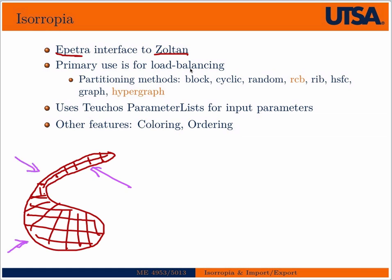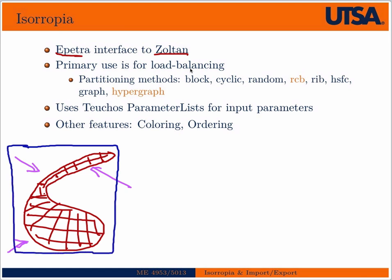We want to see how it deforms. I've drawn it very irregular for a particular reason. If we did something very naive, like partitioned it in space such that this part went to processor 0, this part to processor 1, this part 2, this part 3 — well, you can see that processors 2 and 3 are going to be doing far more work. This would not be a very well-balanced problem.